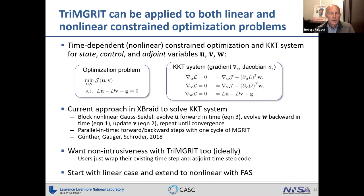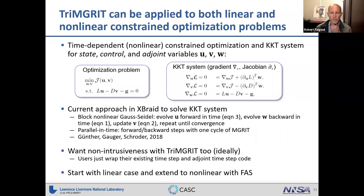These block tridiagonal systems arise in time-dependent constrained optimization. My notation uses U, V, and W for state, control, and adjoint variables. The optimization problem minimizes a functional J subject to a time-dependent PDE constraint — all nonlinear in general. A solution is a zero of the gradient of the Lagrangian L, which combines the functional J, Lagrange multipliers (adjoint variables W), and the constraint. Taking these derivatives gives three types of equations: the last is just the forward time problem.